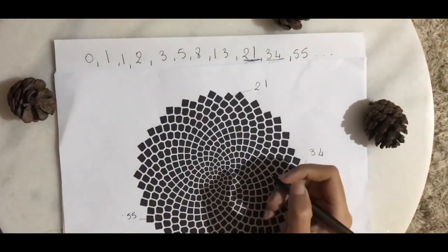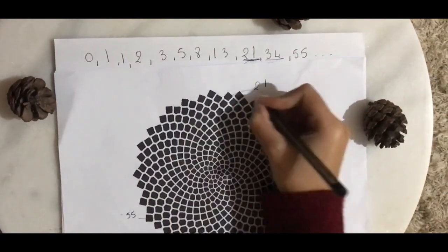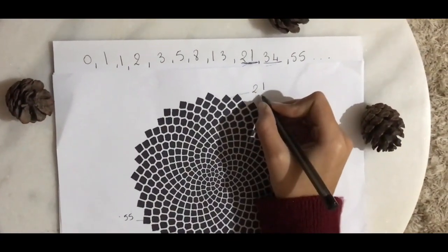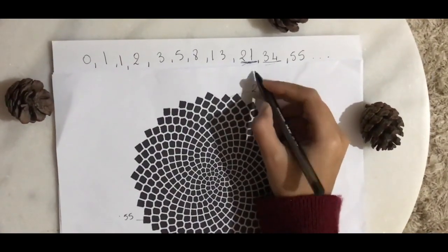For example, if we count the number of spirals going in this direction, we will get 21 total spirals, and 21 is one of our numbers.